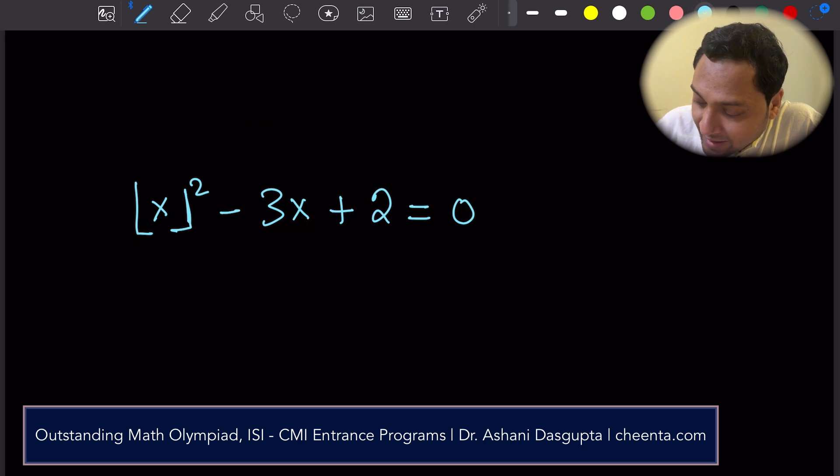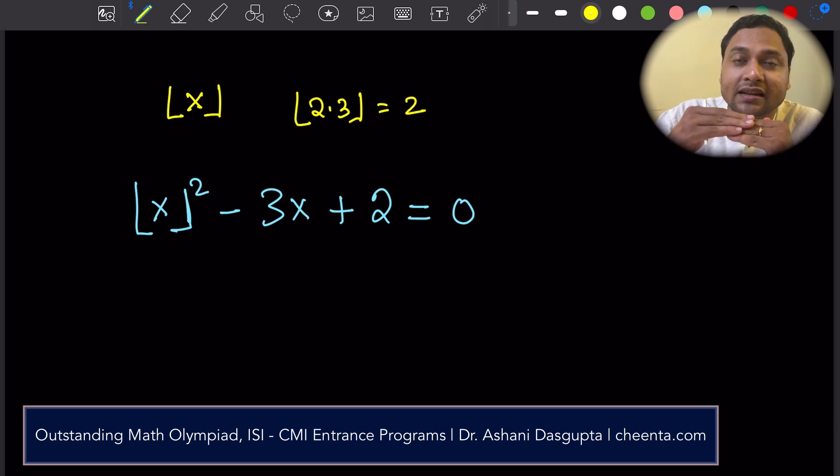What is integer part of x? Maybe you already know this, but I'll just quickly review it. Integer part of x is the largest integer smaller than x. So I'll give you an example. The integer part of 2.3 is 2. 2 is the largest integer smaller than 2.3.